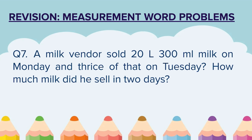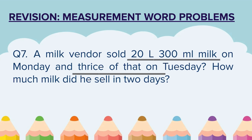Question 7. A milk vendor sold 20 liters 300 milliliters of milk on Monday and thrice of that on Tuesday. How much milk did he sell in 2 days? On Monday he is selling a certain amount and on Tuesday he is selling 3 times that amount. Whatever answer you get for Tuesday, add Monday's quantity to that to get the final answer.